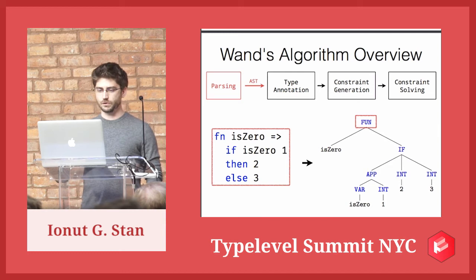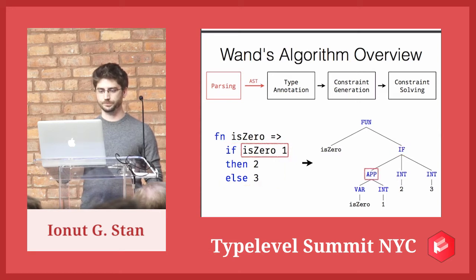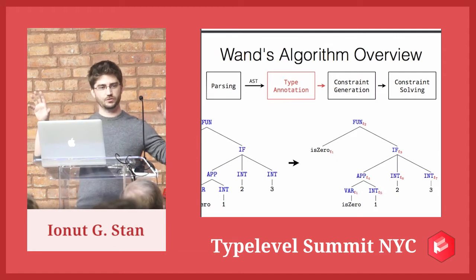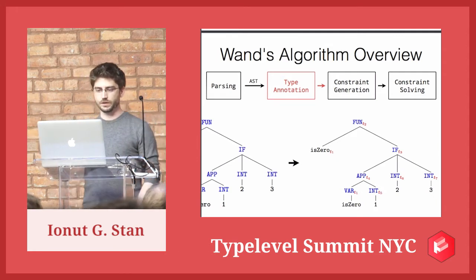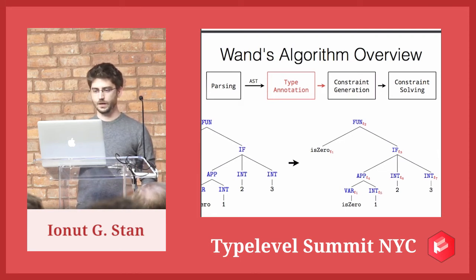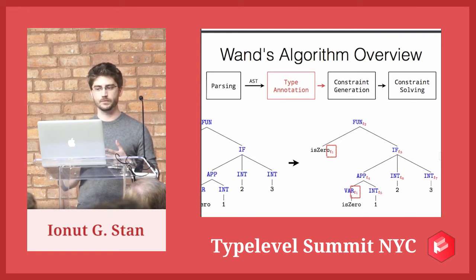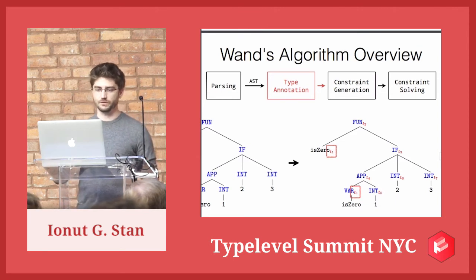This is the node for the function. We have one for the argument, one for the if expression, and so on for each node in the tree. Now comes the type annotation part — another function that takes an untyped tree and produces a typed tree. We go over each node and invent a new type: a placeholder type that will later be filled with an actual type. The actual types are int, bool, and function types. So these are just placeholder types — like a template for types.